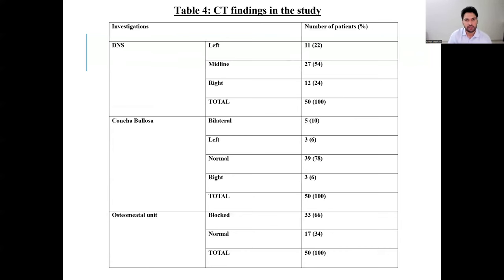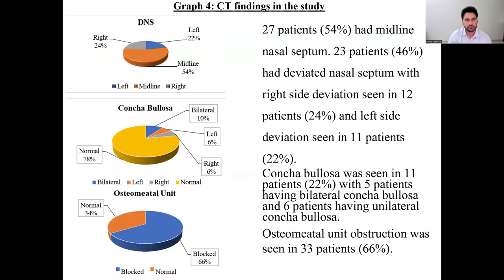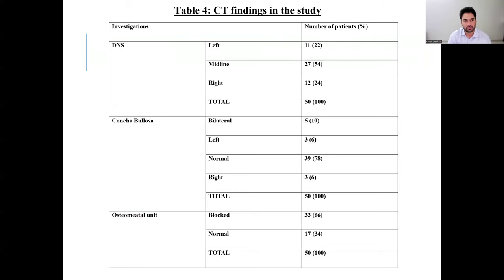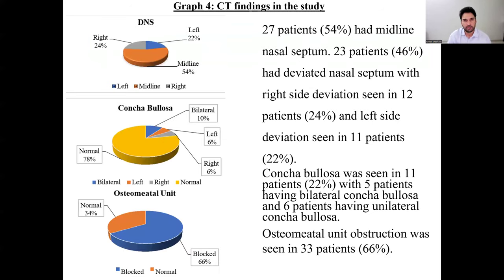Regarding CT findings of nasal septum deviation, concha bullosa, and osteomeatal unit: 27 patients (54%) had a midline nasal septum, while 23 patients had a deviated nasal septum with right-sided deviation in 12 patients and left-sided deviation in 11 patients. Concha bullosa was seen in 11 patients, with 5 patients having bilateral concha bullosa and 6 patients having unilateral obstructive concha bullosa. Osteomeatal unit obstruction was seen in 33 patients.